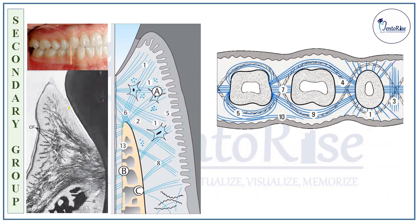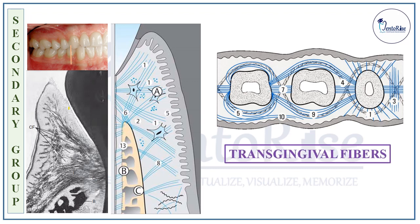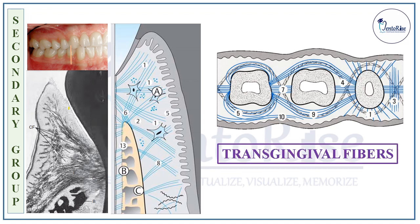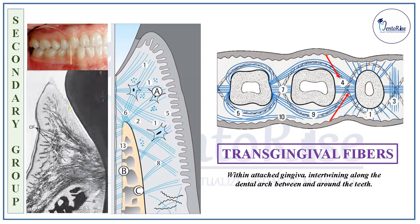The next category of fibers within the secondary group are the Transgingival fibers. As seen in the figure, these fibers intertwine along the dental arch between and around the teeth. They are present within the attached gingiva and they secure the alignment of the teeth within the dental arch.